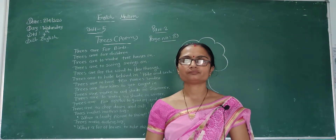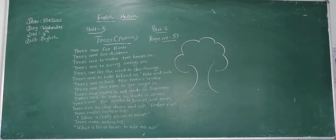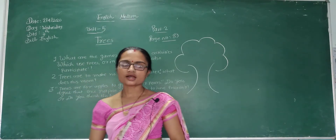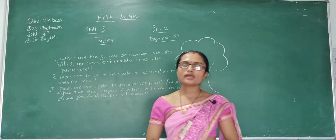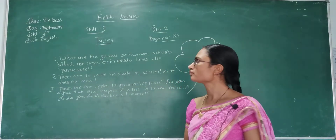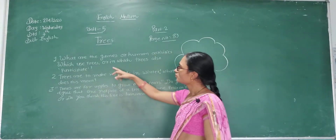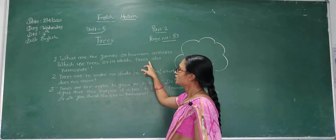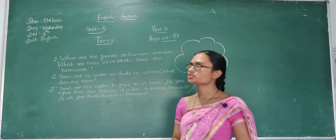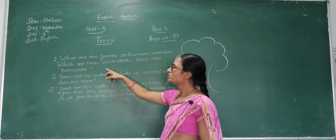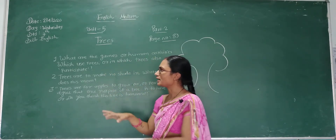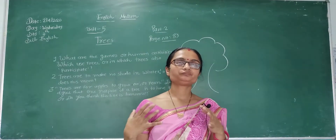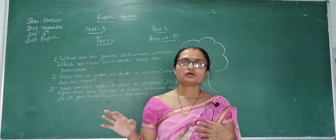Now let's start answering the questions. In your textbook there are three questions. Question 1: What are the games or human activities which use trees or in which trees also participate? The children are playing games under the trees, and children play many games using trees.